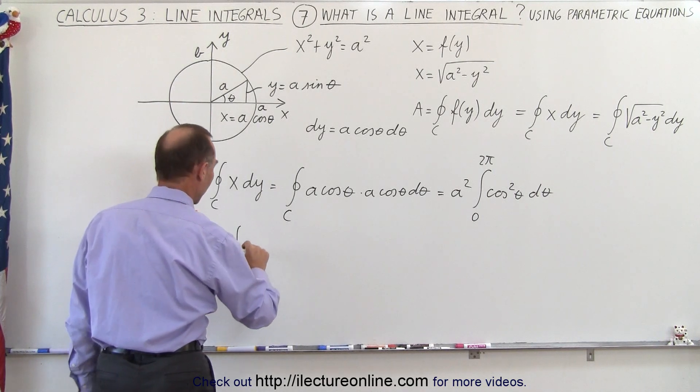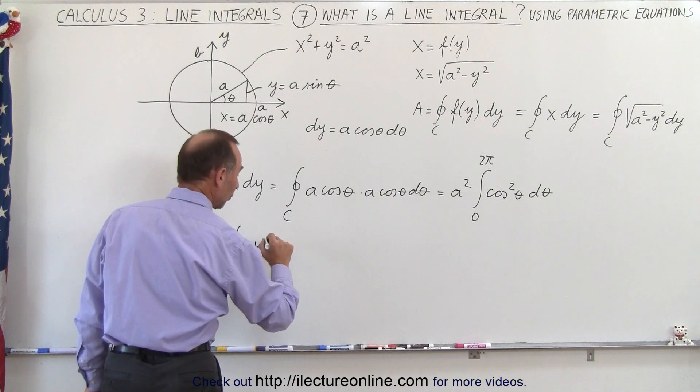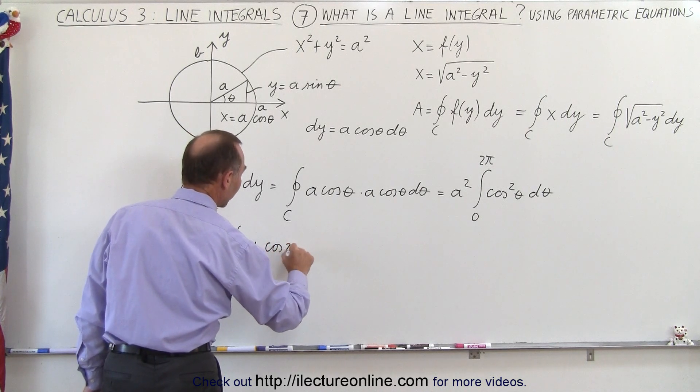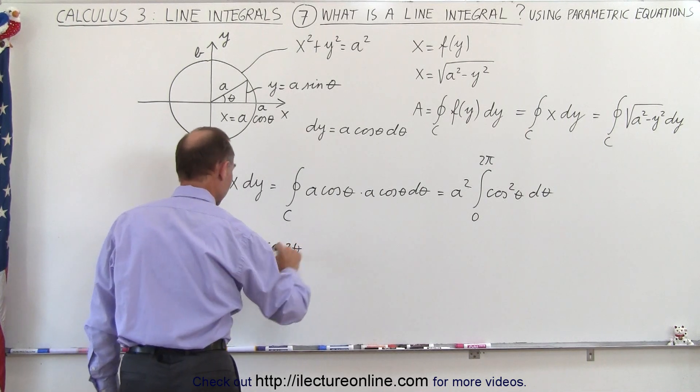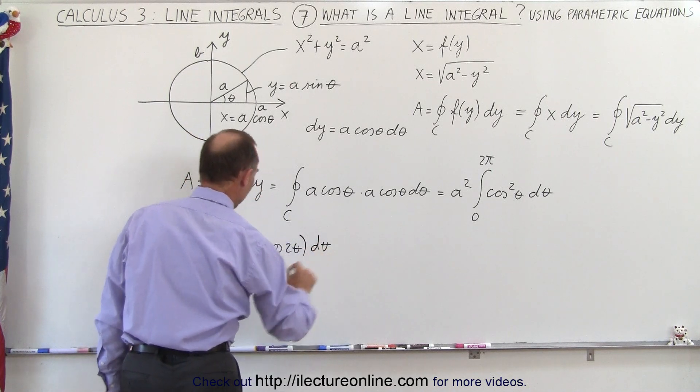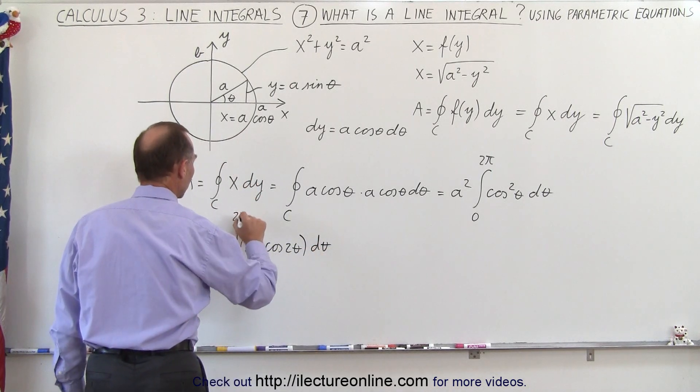Times the integral of 1 plus 2 times, or 1 plus the cosine of 2 theta, times d theta from 0 to 2 pi.